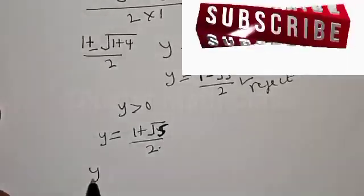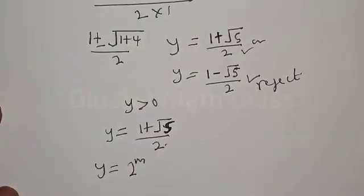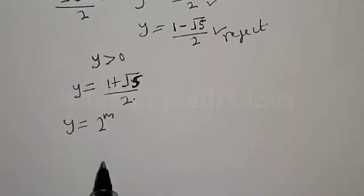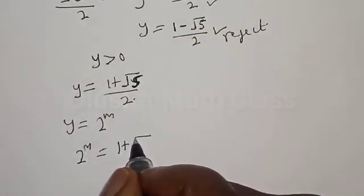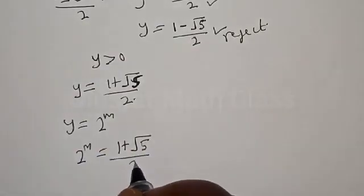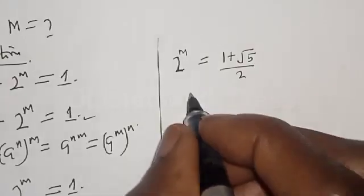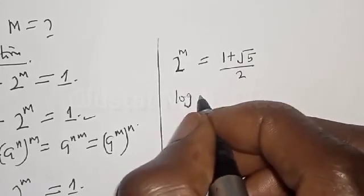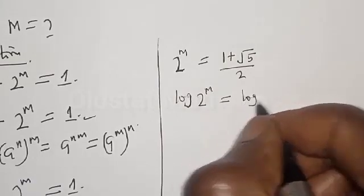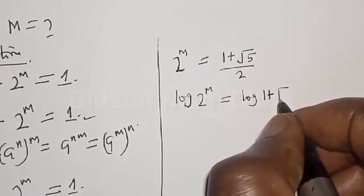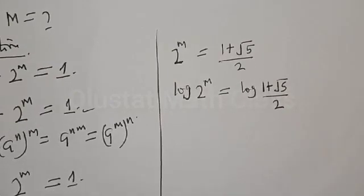Therefore y equals 1 plus square root of 5 divided by 2. And we know that y equals 2 raised to power m. Therefore our equation becomes 2 raised to power m equal to 1 plus square root of 5 divided by 2. Now let's take the log of both sides.